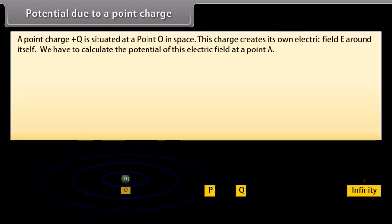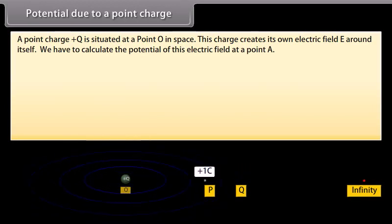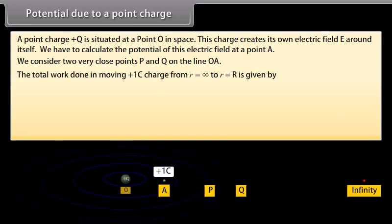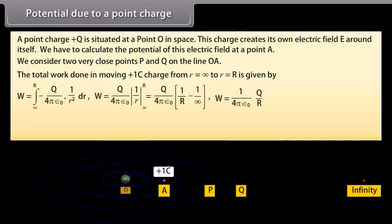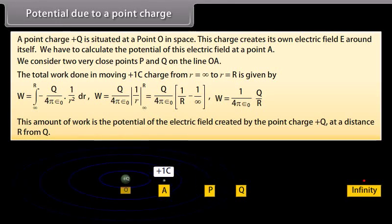Potential due to a point charge. A point charge plus Q is situated at a point O in space. This charge creates its own electric field E around itself. We have to calculate the potential of this electric field at point A. We consider two very close points P and Q on the line OA. The total work done in moving plus one coulomb charge from infinity to point R is given by W equals 1 upon 4π ε₀ multiplied by Q upon R. This amount of work is the potential of the electric field created by the point charge plus Q at a distance R from Q.